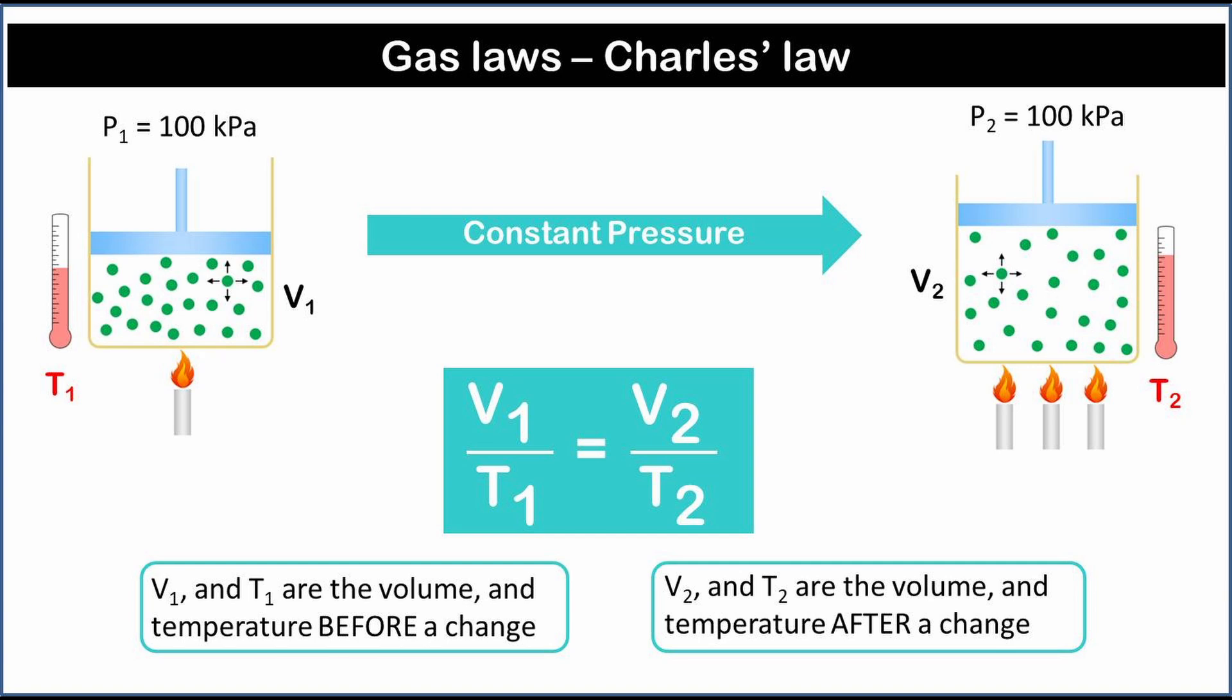Charles found that in an experiment in which the pressure of the gas is kept constant, the ratio of the volume to the Kelvin temperature remains constant. In other words, to keep the same pressure when the Kelvin gas temperature is increased, the volume occupied by the gas must increase as well.